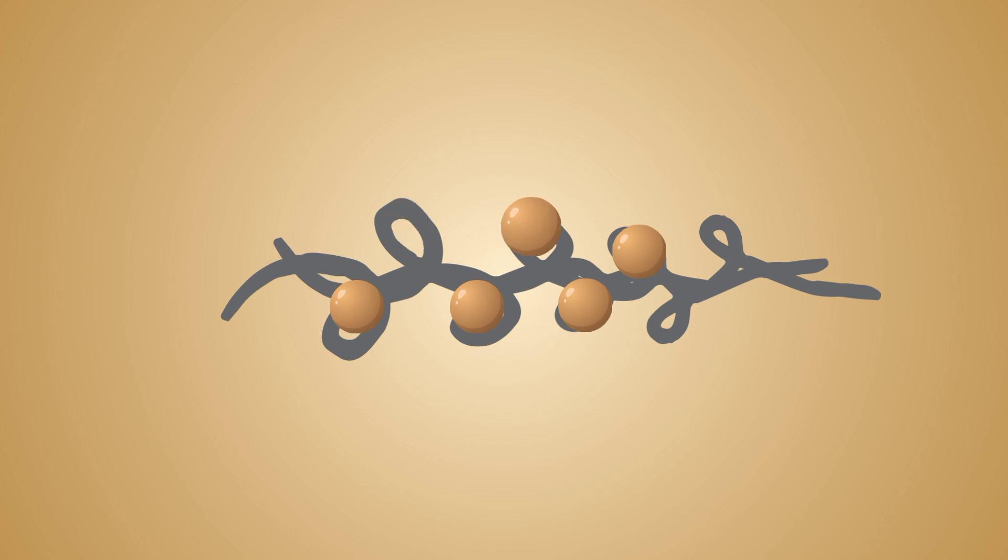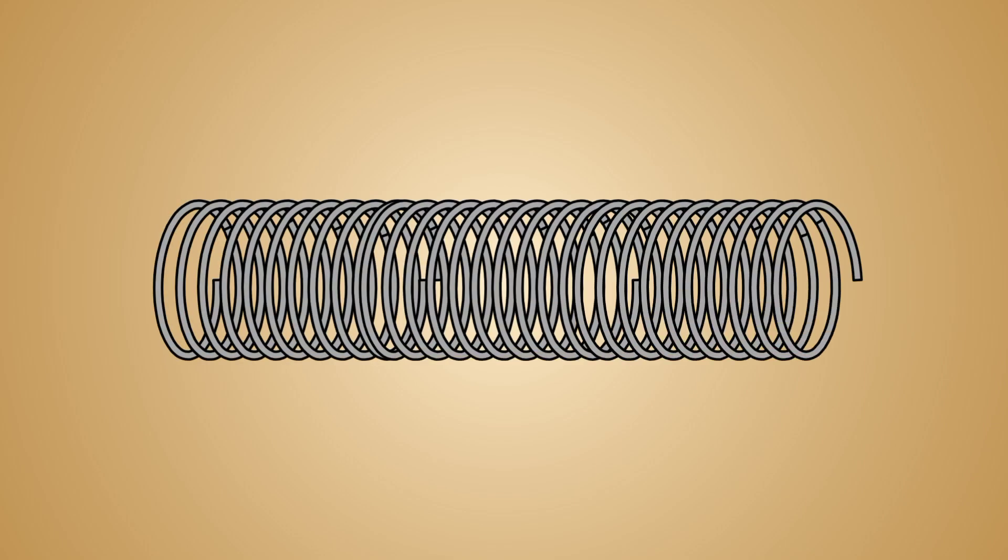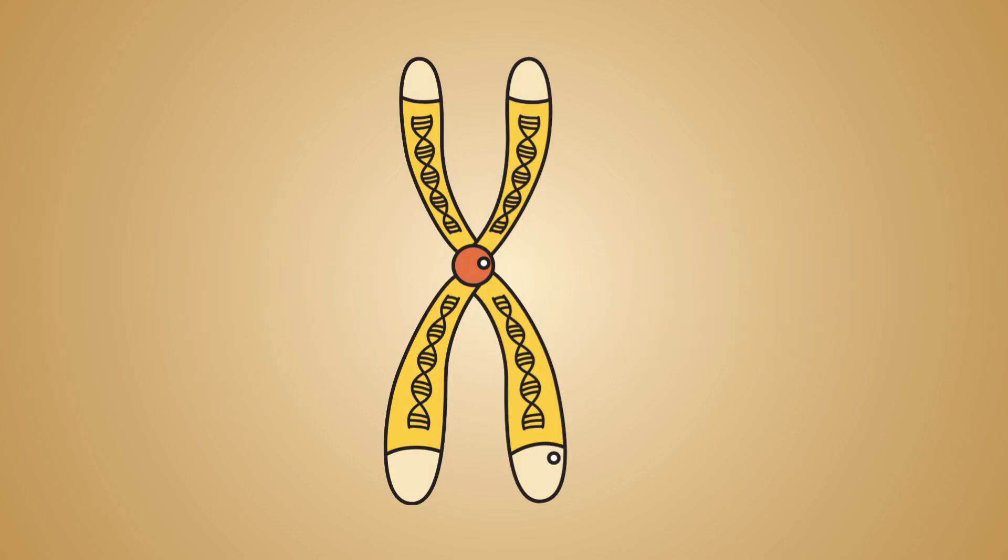These solenoid structures are further organized into loops by binding of nucleosomes at AT-rich regions, called scaffold-associated regions (SARs), of the DNA. These loops are further coiled during mitosis, causing chromosomes to condense and become visible.